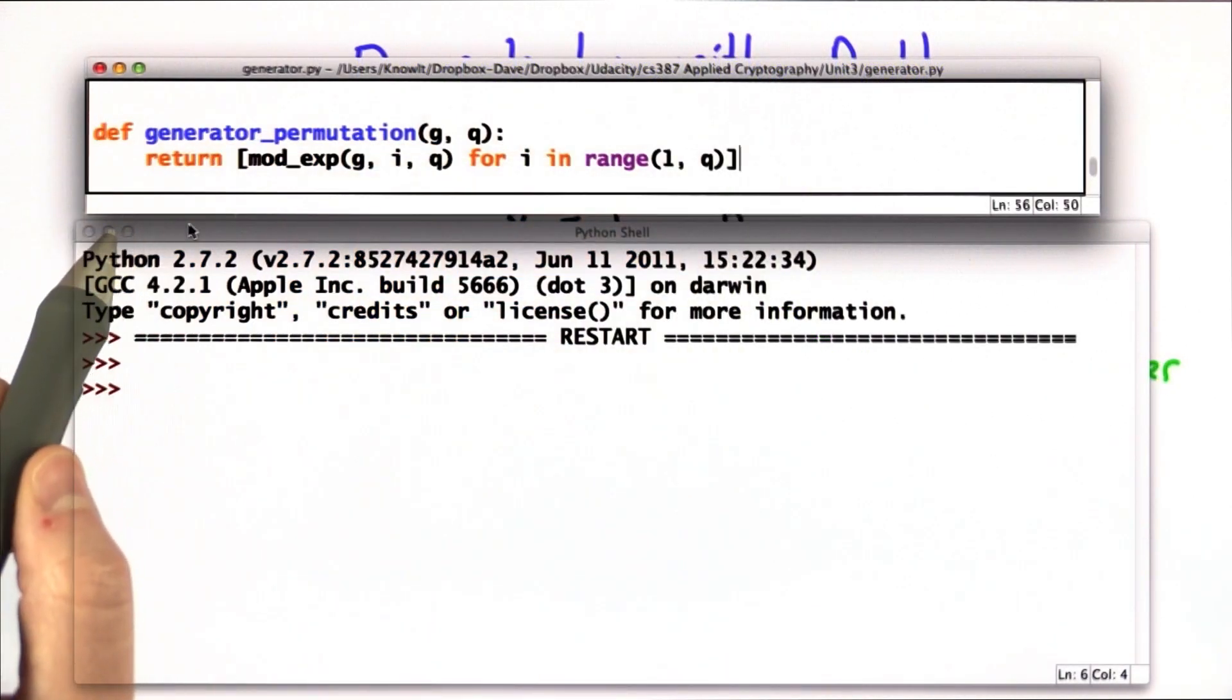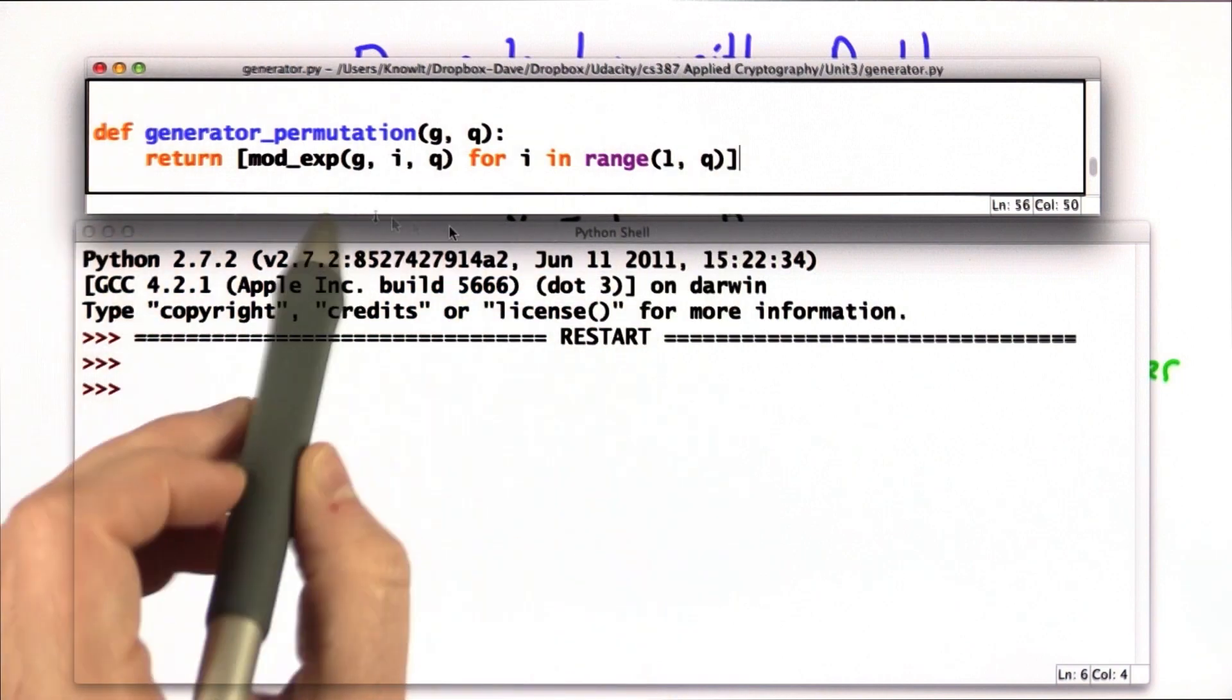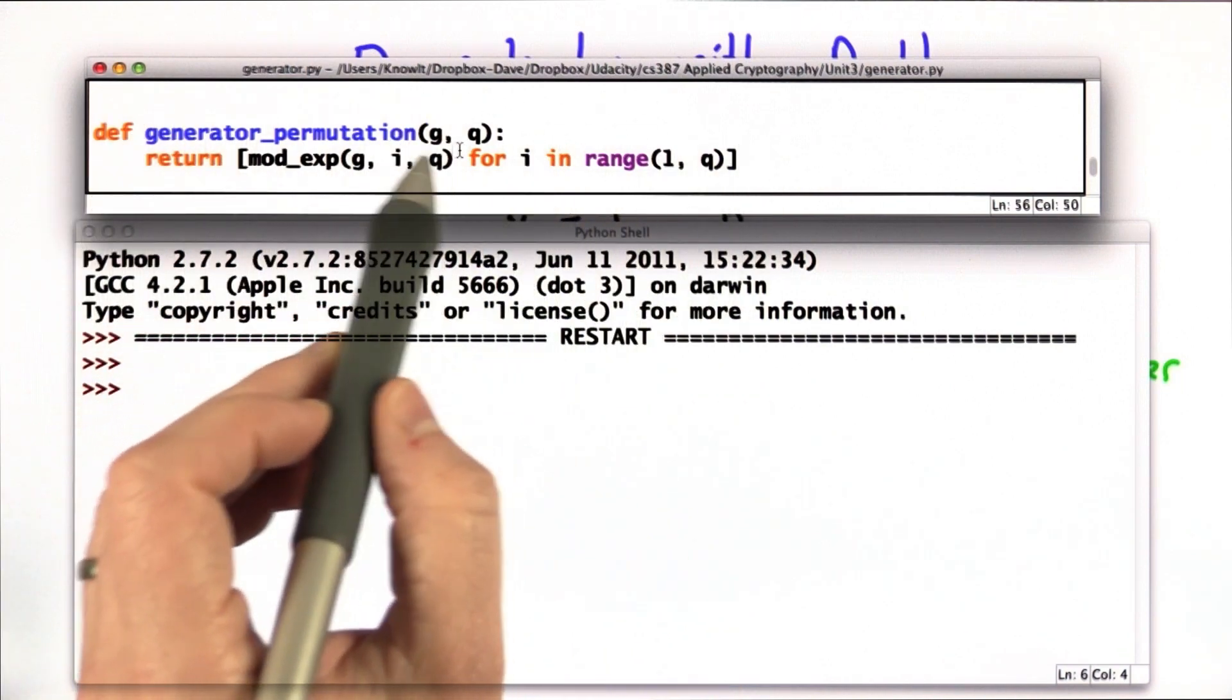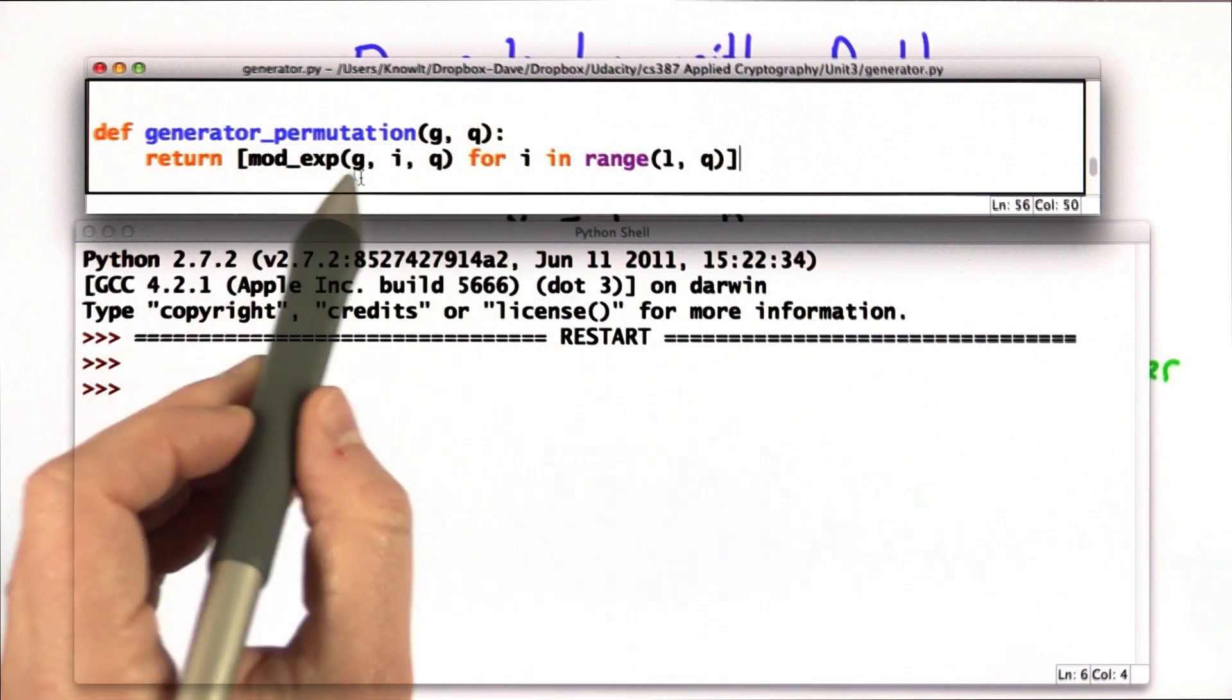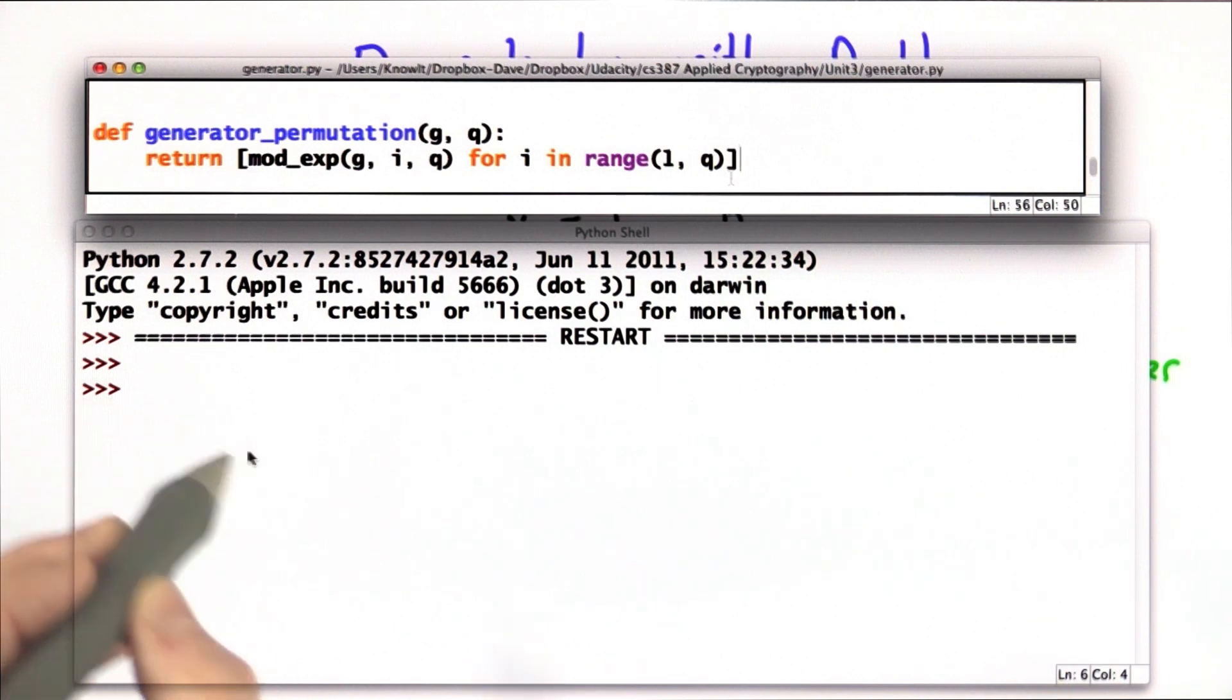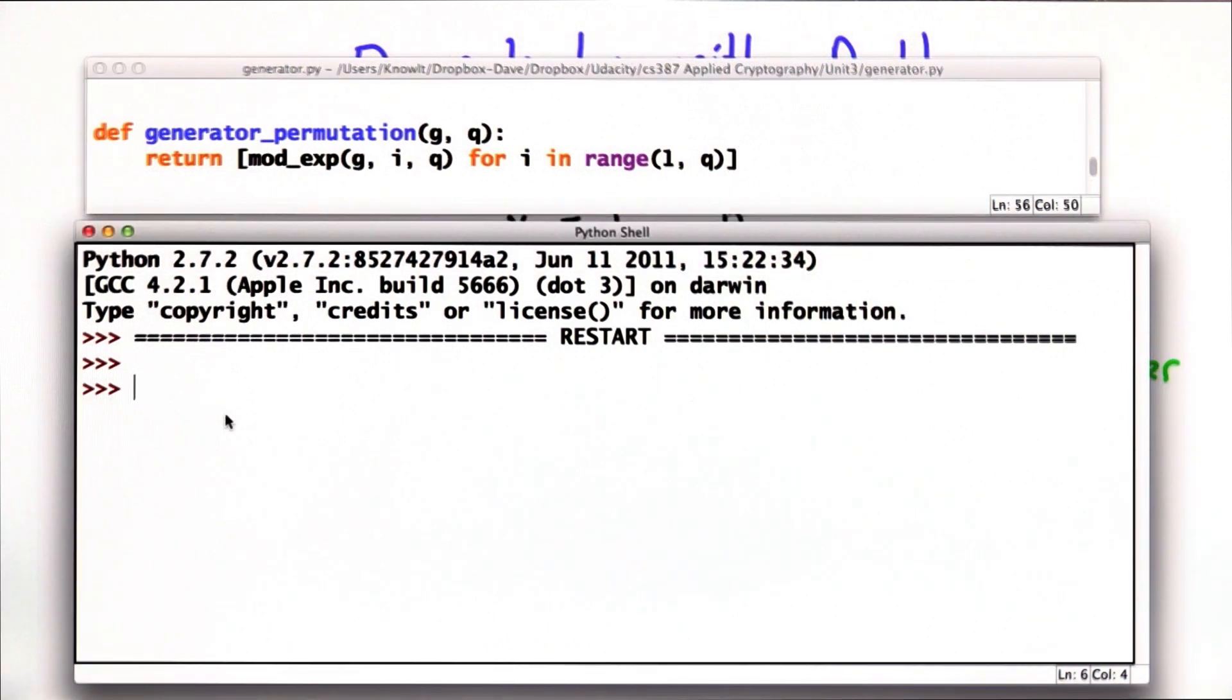So as a little demonstration, certainly not a proof, here's a code that produces the permutation for given some generator and some modulus, raises the generator to every power between 1 and the modulus minus 1. So we can try that with a fairly small prime number, so you can see the results.